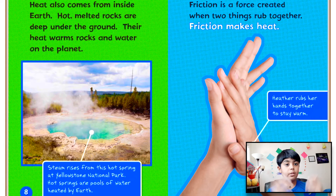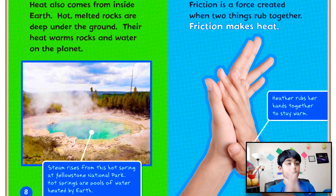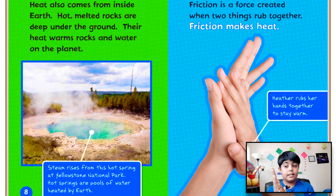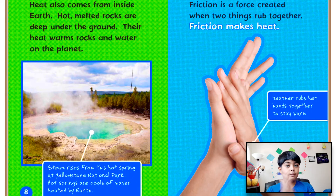Friction is a force created when two things rub together. Friction also makes heat — if you rub your hands together, you'll feel warmth. That's also why people rub their hands together when they're cold. As you can see in the picture, a girl rubs her hands together to stay warm.